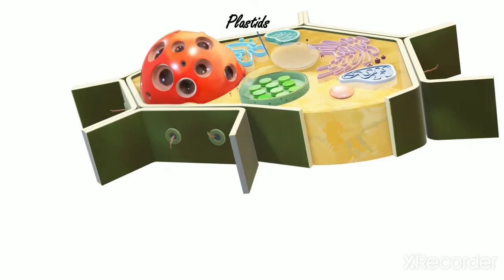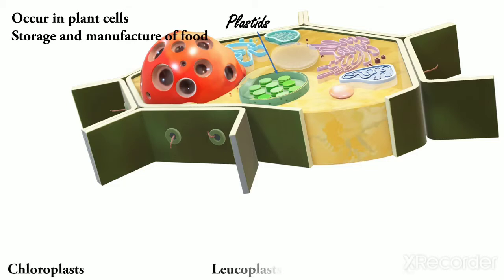Third, Plastids. They occur only in plant cells and are of different colors. Plants use them for storage and manufacturing of food materials. They are of three types: Chloroplast, Leucoplast, and Chromoplast.